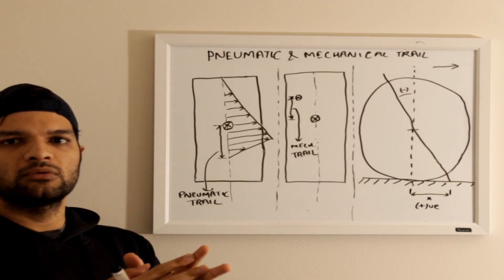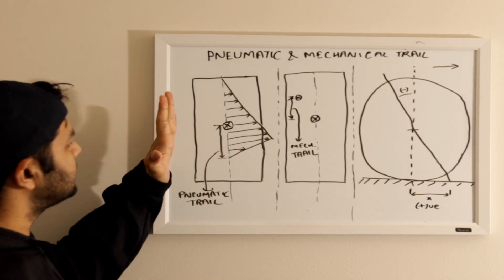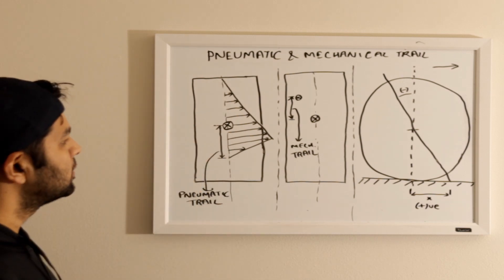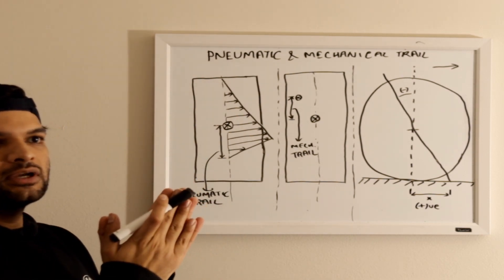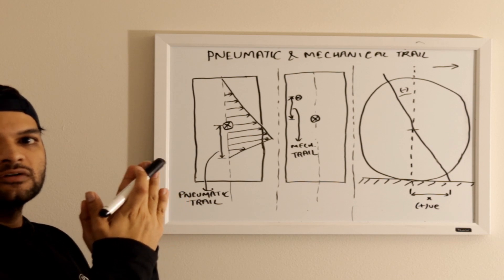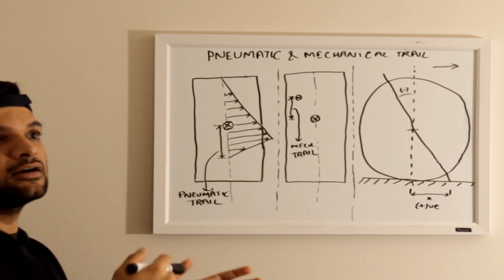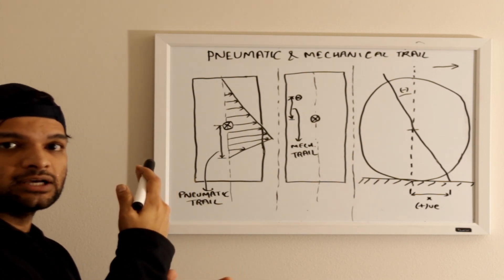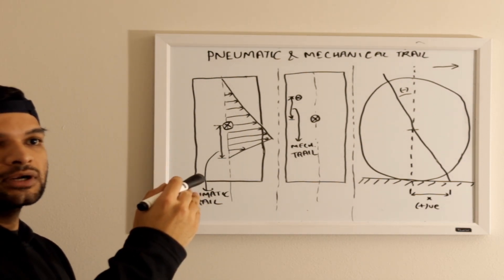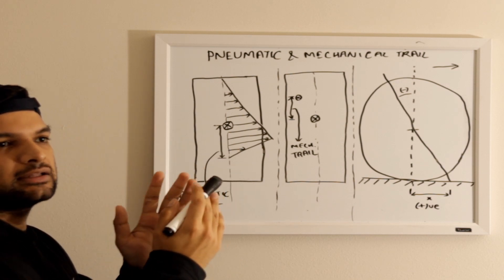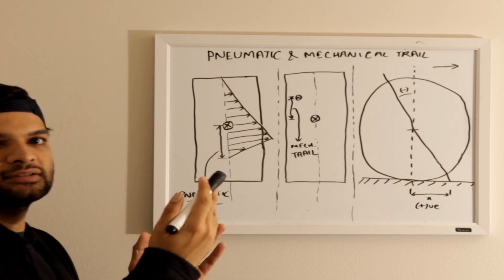So as we know, whenever we are moving, there is a tire like this and it's turning in the left direction. There will be a difference between the angle of direction of heading and direction of travel, which essentially means the entirety of the tire will be facing in one direction. However, the contact patch will be facing in a little bit of an offset angle, and this offset angle is called slip angle.